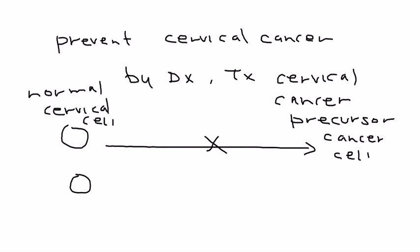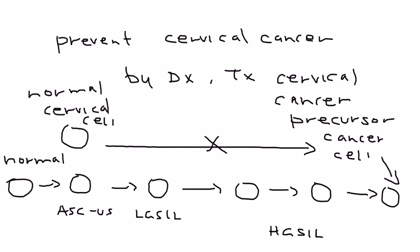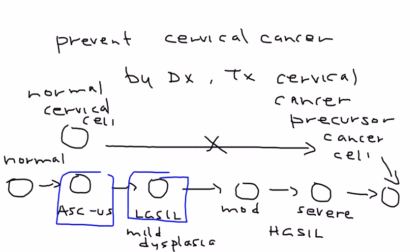These stages are described with a lot of terminology: ASCUS (atypical squamous cells), LGSIL (low-grade squamous intraepithelial lesion), and HGSIL (high-grade squamous intraepithelial lesion). These are often described as mild dysplasia, moderate dysplasia, and severe dysplasia. The pap smear is trying to catch cells at these precursor stages so they can be treated before progressing to full-blown cervical cancer.